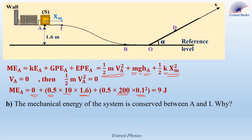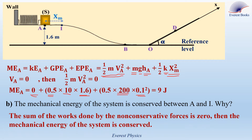Part B: the mechanical energy of the system is conserved between A and I. Why? The sum of the works done by the non-conservative forces is 0, so the mechanical energy is conserved. Also, because friction is neglected, the mechanical energy is conserved. Both answers are acceptable.